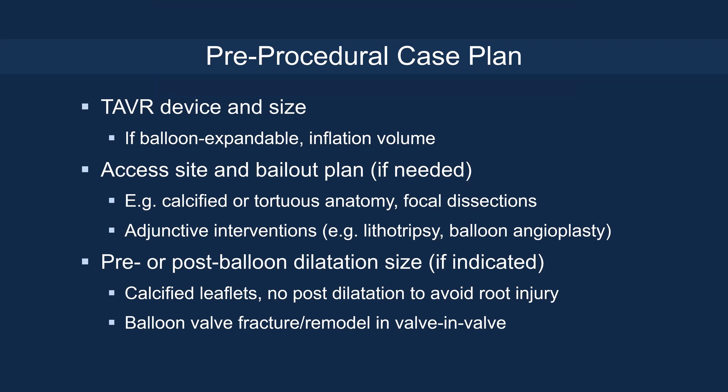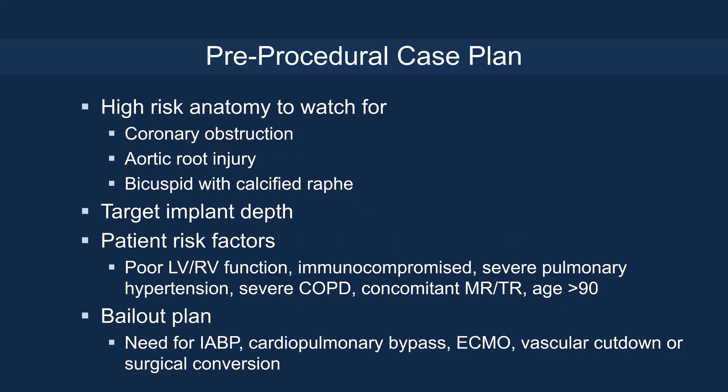For pre-procedural case planning, you need to know the device and size. If you plan to use the balloon-expandable valve, look at the inflation volume, access size and bail-out plan — such as calcified tortuous anatomy, focal dissections — in terms of need for adjunctive intervention like atherectomy or balloon angioplasty. Do you plan to pre- or post-balloon dilate the valve? Consider high-risk anatomy factors: coronary obstruction risk, root injury, bicuspid calcified raphe, target implant depth, patient risk factors such as poor RV/LV function, immunocompromised status, severe pulmonary hypertension, severe COPD, concomitant mitral regurgitation, or age over 90. Also plan for bail-out needs such as balloon pump, cardiopulmonary bypass, ECMO, vascular cut-down, or surgical conversion if necessary.